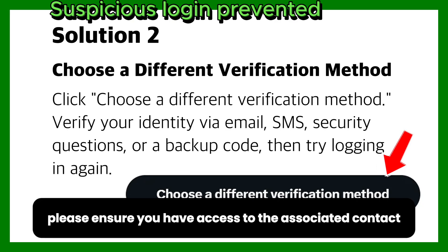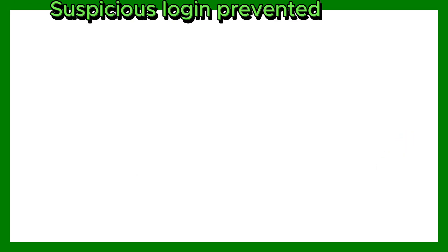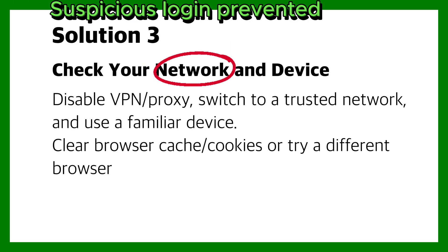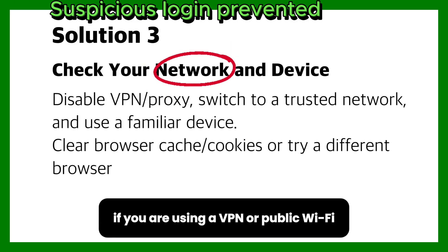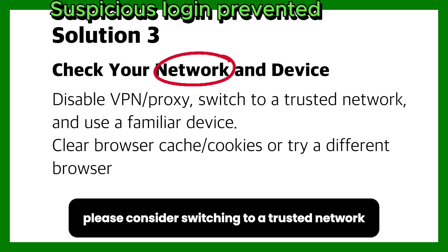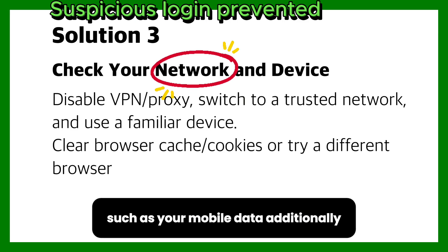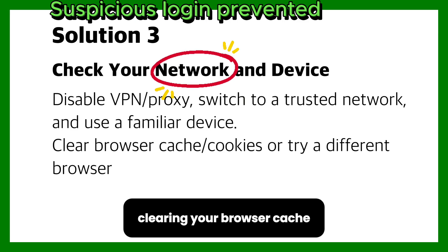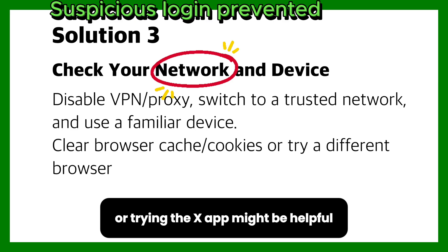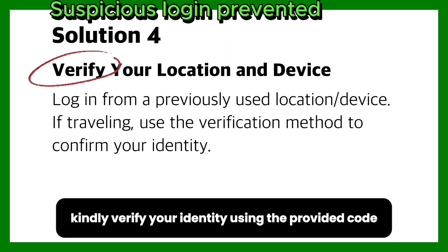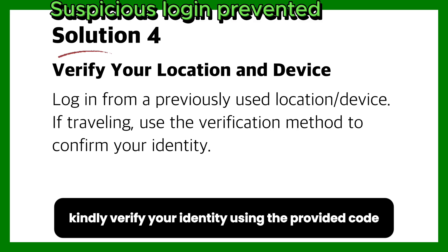Next, check your network connection. If you are using a VPN or public Wi-Fi, consider switching to a trusted network such as your mobile data. Additionally, clearing your browser cache or trying the X app might be helpful. For those using a new device, verify your identity using the provided code.